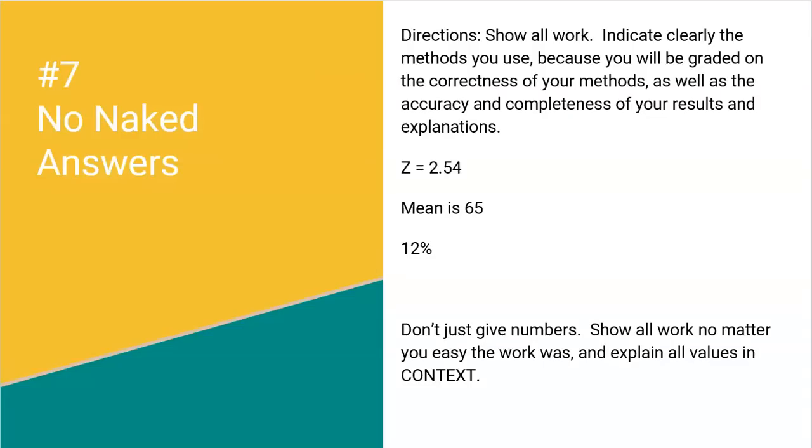Tip number seven, no naked answers. What I mean by this is on the FRQs, show all work. Indicate clearly the methods that you use because you will be graded on the correctness of your methods as well as the accuracy and completeness of your results. So don't ever just say Z equals 2.54. Like literally show me the work for that. I took my value, I subtracted the mean, I divided by the standard deviation or the standard error. Like show the work. Same thing, don't say, oh, the mean is 65. Explain how you got that. Like how did you figure out that the mean was 65 or the median was 55? Make sure that you either explain or show your work. Words are great, math work is great, whatever. When it comes to probabilities, don't just say 12% as a final answer. Like how did you get that? What are you actually trying to find the probability of? Like label it. So maybe you write down the probability that in a binomial model, X is greater than or equal to two, that is 12%. That makes a little bit more sense. It's more explanation as to what it is you're actually finding. So no naked answers, don't just give numbers, show work and explain in context if you need to.